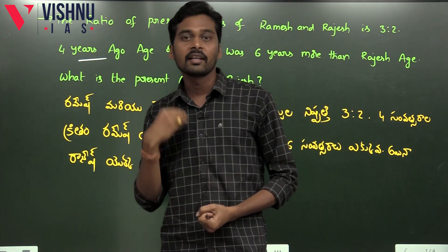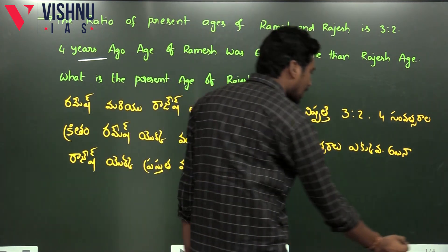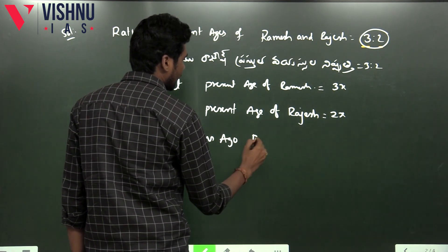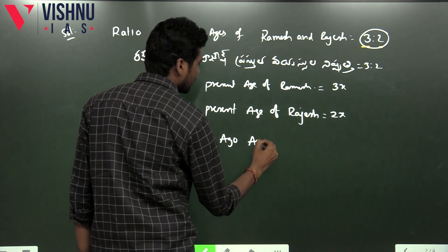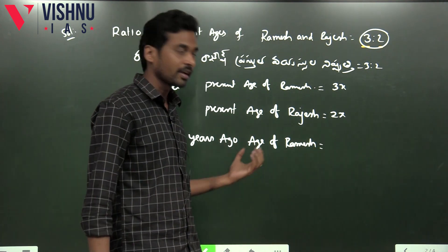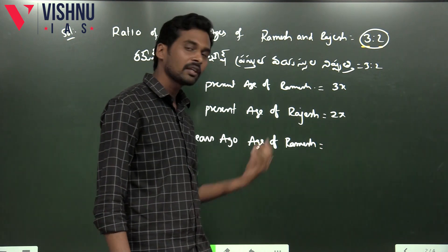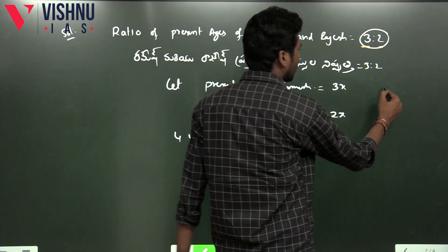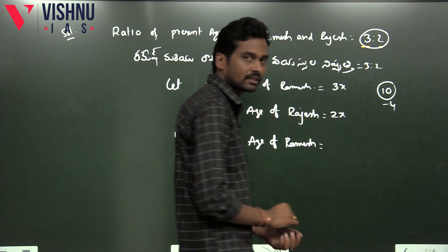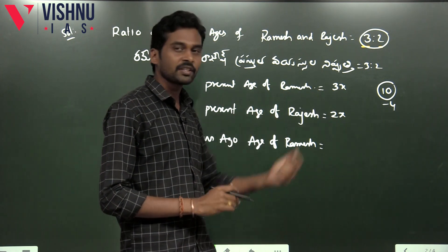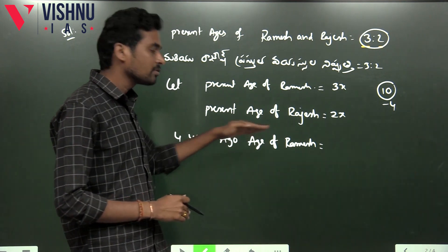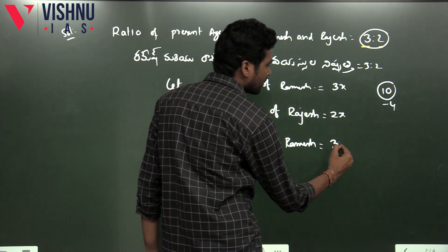We have the calls and data related to four years ago. The next condition is: four years ago, age of Ramesh. We have to understand this. Four years ago, Ramesh's present age is 3x, so four years ago the age of Ramesh is 3x minus 4. We represent the present age as 3x, so four years back it is 3x minus 4.